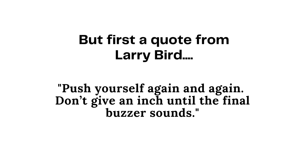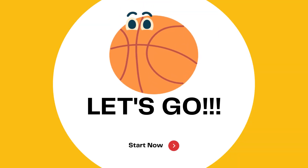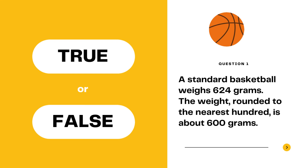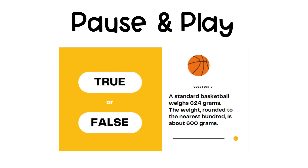But first, a quote from Larry Bird: Push yourself again and again. Don't give an inch until the final buzzer sounds. Question 1, true or false: A standard basketball weighs 624 grams. The weight rounded to the nearest hundred is about 600 grams. Pause here and press play when you have your answer ready.